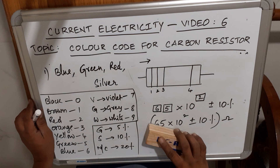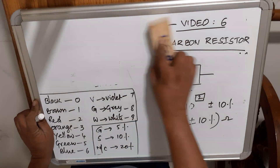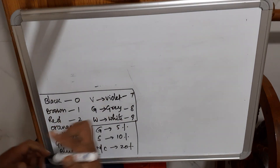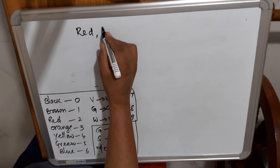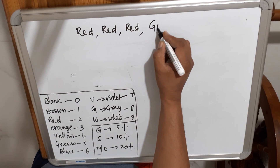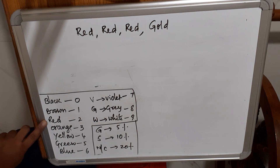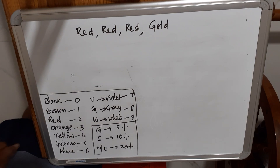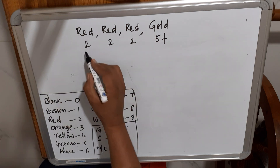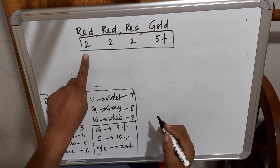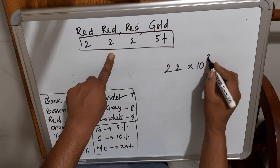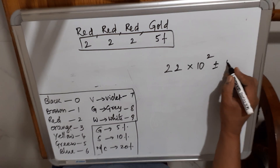Next color sequence example: Red, Red, Red, Gold. The number for Red is 2. So: 2, 2, Red gives 10², Gold gives ±5%.